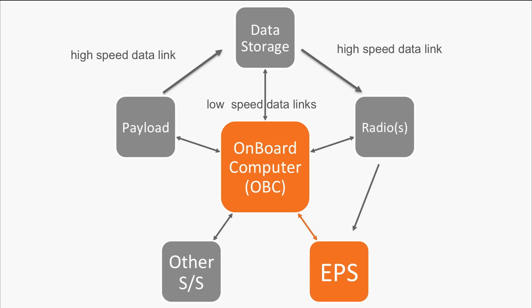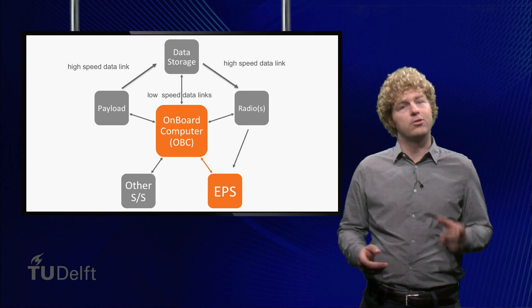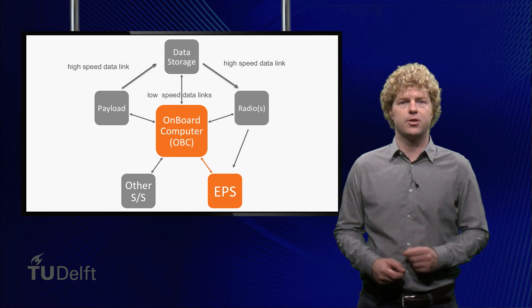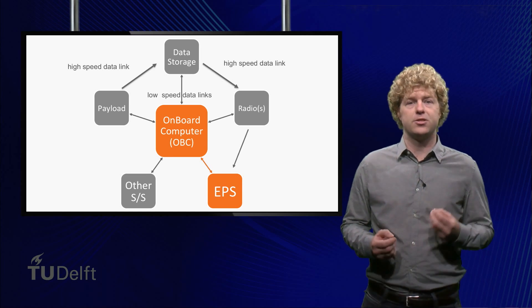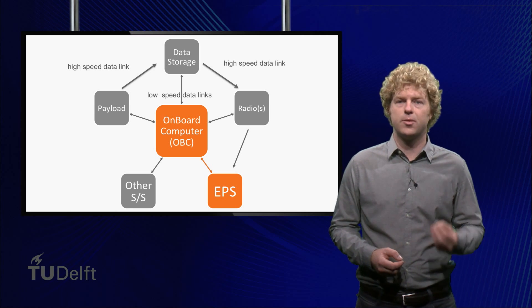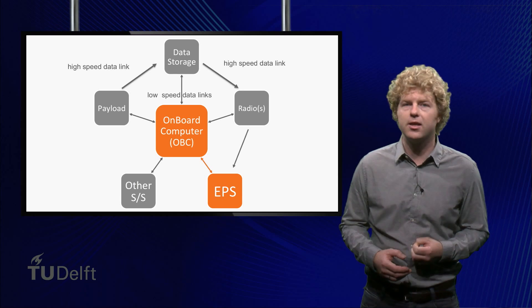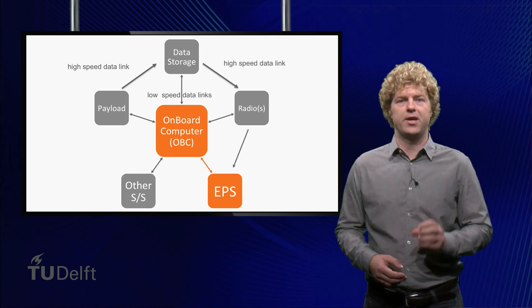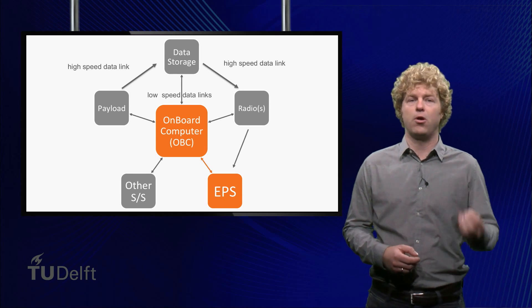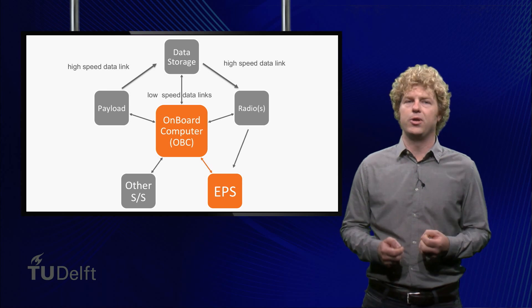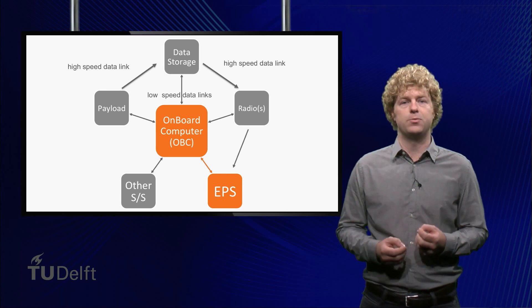First of all, the EPS can tell the onboard computer how much power is available and consumed. This can be vital information for onboard operations. The OBC can for instance decide to turn off a non-critical subsystem in case there is too little power available. Secondly, the OBC tells the EPS which subsystem should be turned on and which should be turned off. This communication typically goes through a low-speed data link.